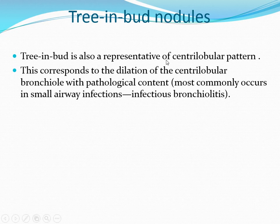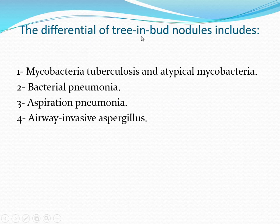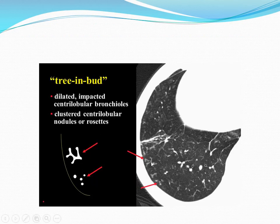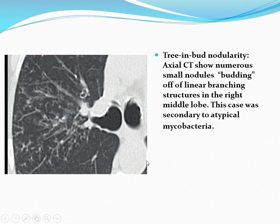Tree-in-bud nodules represent a centrilobular pattern corresponding to dilatation of the centrilobular bronchiole with pathological content. This most commonly occurs in small airway infections and infectious bronchiolitis. The differentials of tree-in-bud nodules include mycobacterial tuberculosis and atypical mycobacteria, bacterial pneumonia, aspiration pneumonia, and airway-invasive aspergillus. There are dilated impacted centrilobular bronchioles. Axial CT shows numerous nodules budding off linear branching structures in the right middle lobe. This case was secondary to atypical mycobacteria.